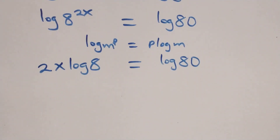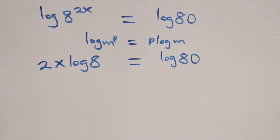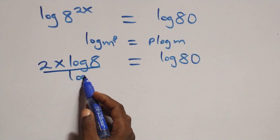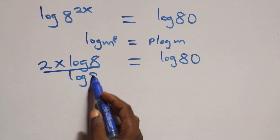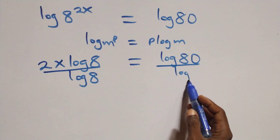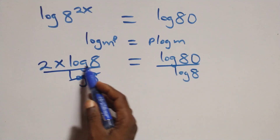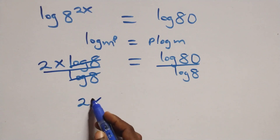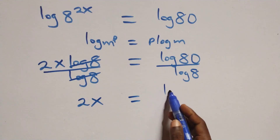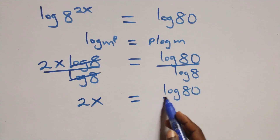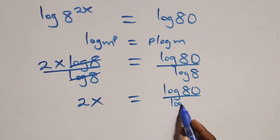The next step: divide both sides by log 8. The log 8 terms cancel each other, and we have 2x equals to log 80 over log 8.